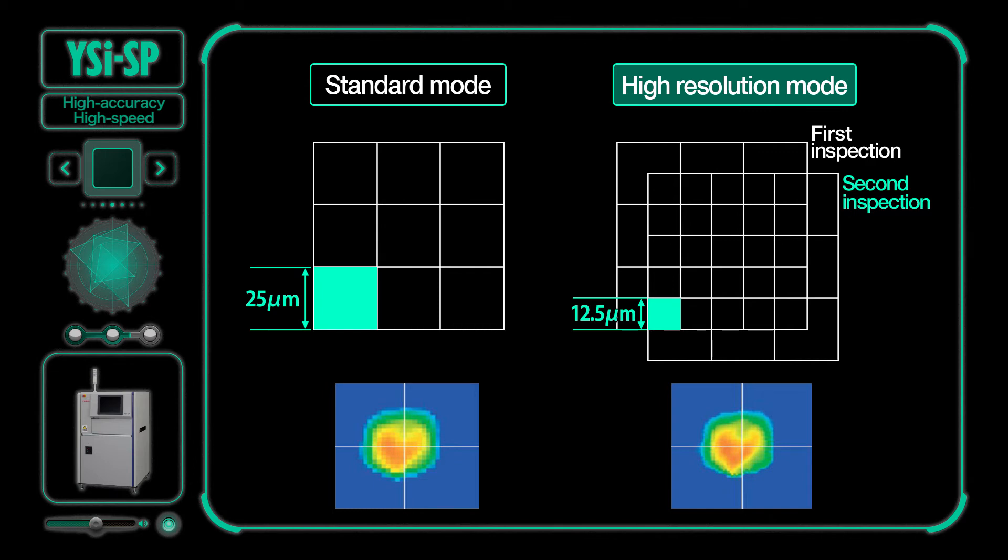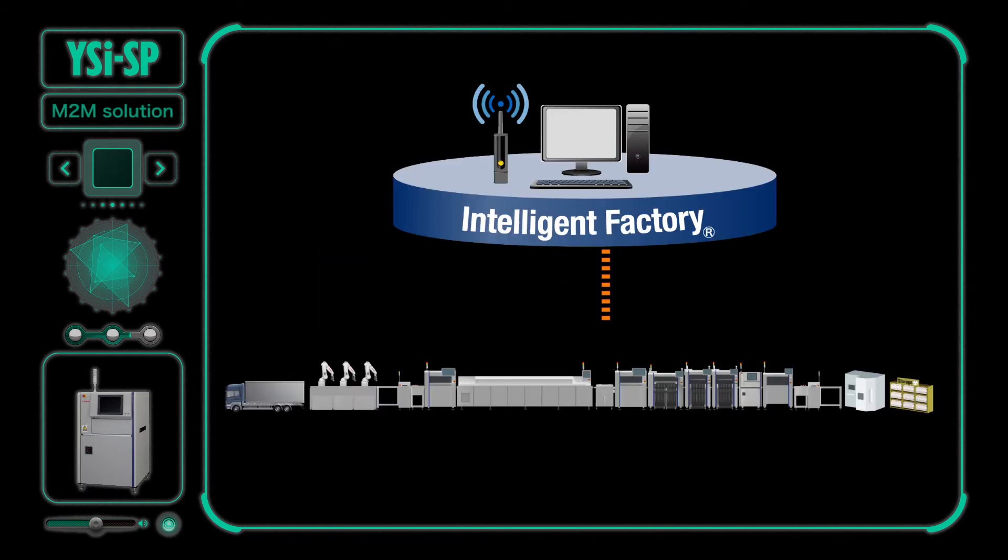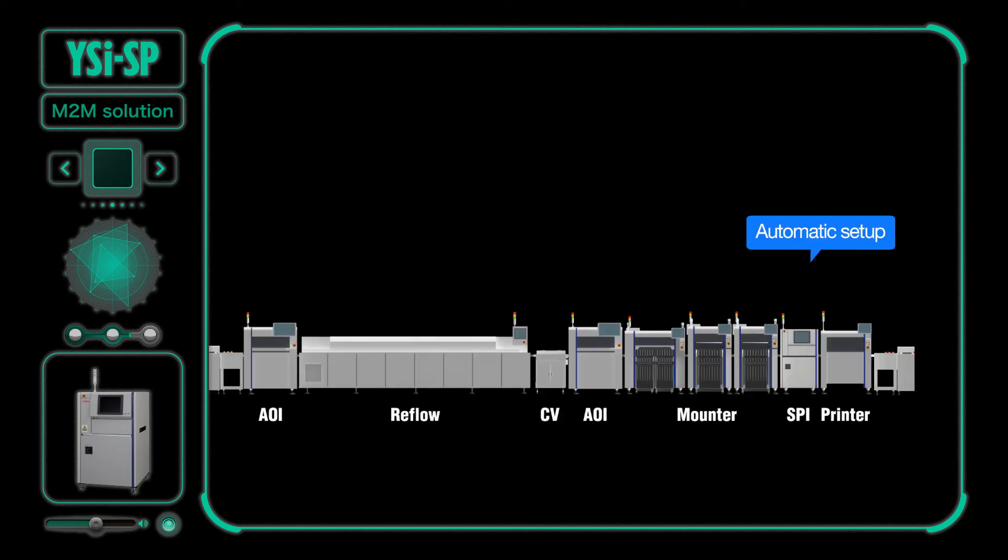The M2M solution. Linking with SPI and other machines in the production line means they can work together to contribute to high quality and high efficiency production. For instance, automatic setup can be sequentially performed from the upstream machines.